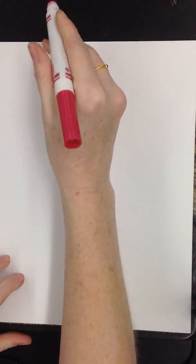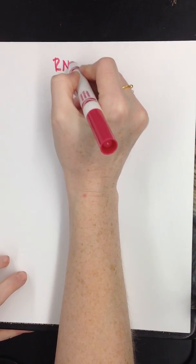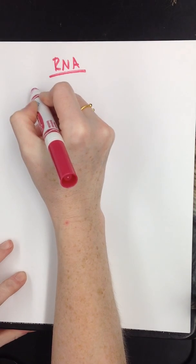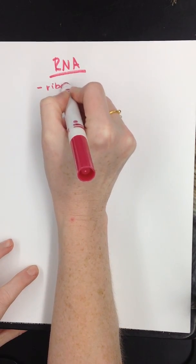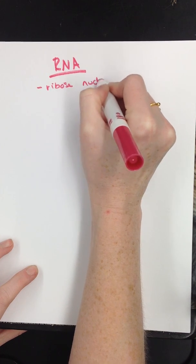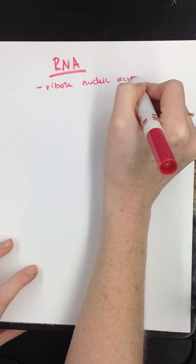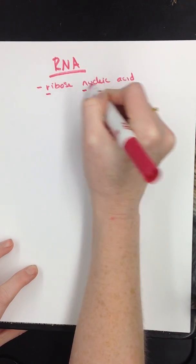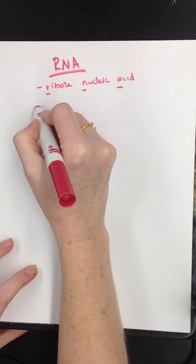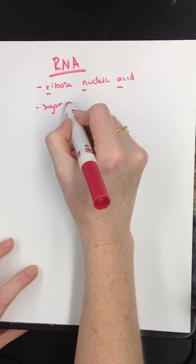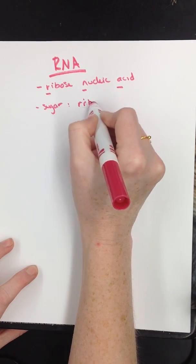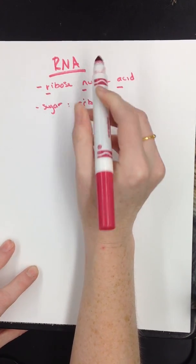Now let's talk about RNA. RNA stands for ribose nucleic acid. Now my sugar for RNA, remember we talked about oses, my sugar is ribose. So that's one difference between DNA and RNA.